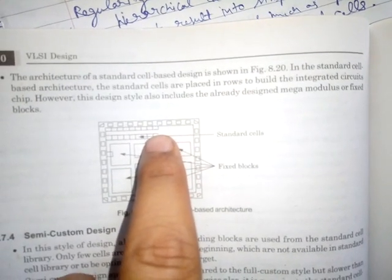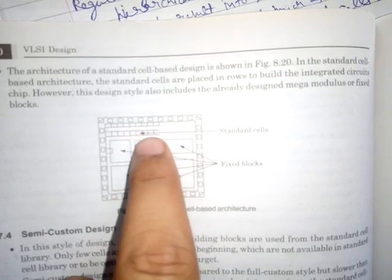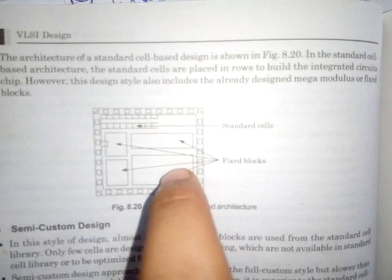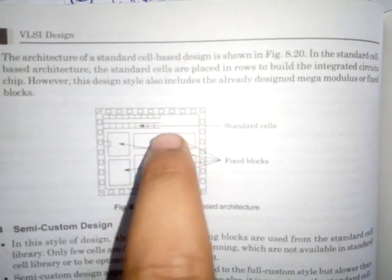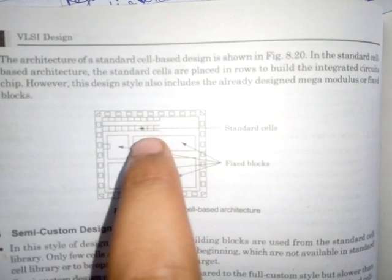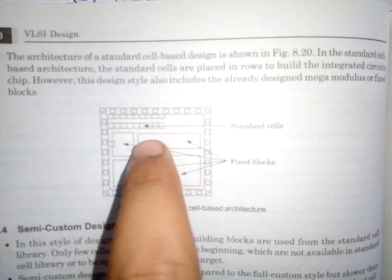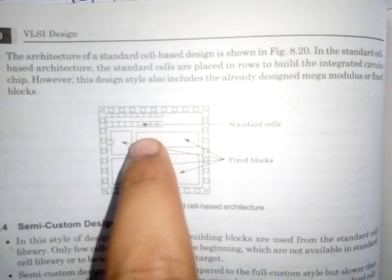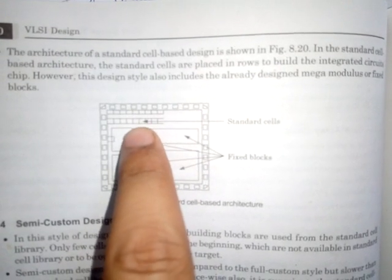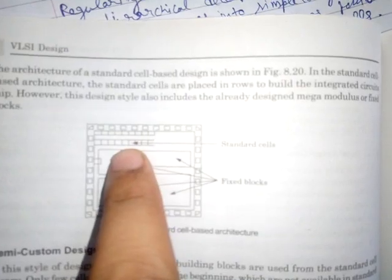They are placed in rows to build integrated circuit chips. But in the standard cell-based design there could be fixed blocks that are already present, as they are pre-tested, pre-wired, and pre-characterized. So the fixed blocks could be there and these are standard cells, these rows of standard cells.